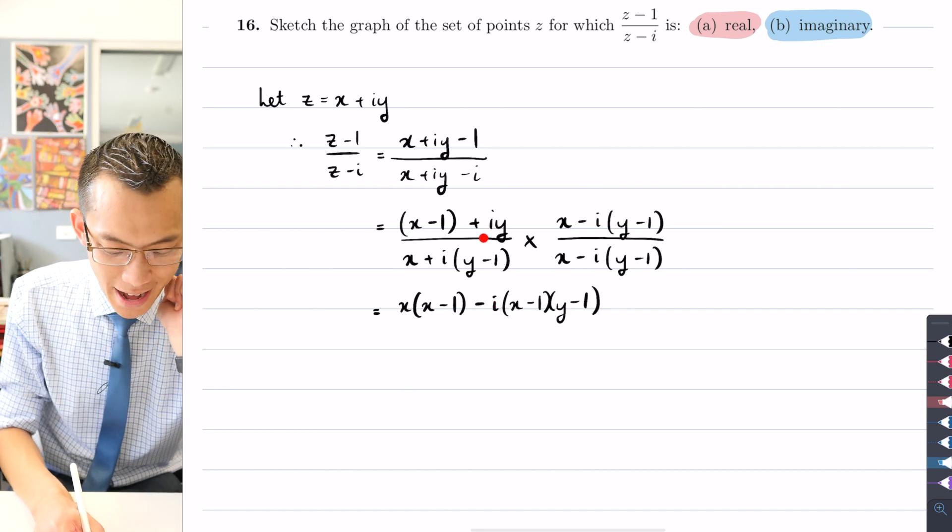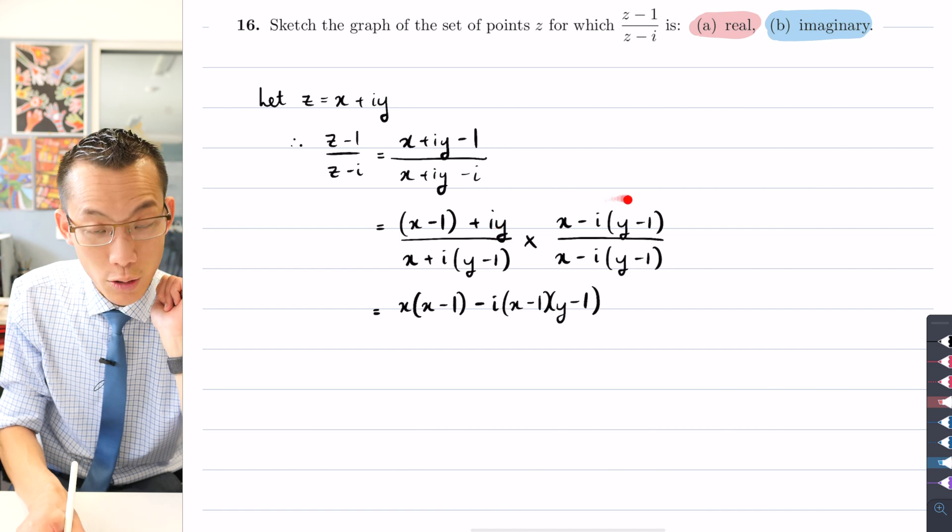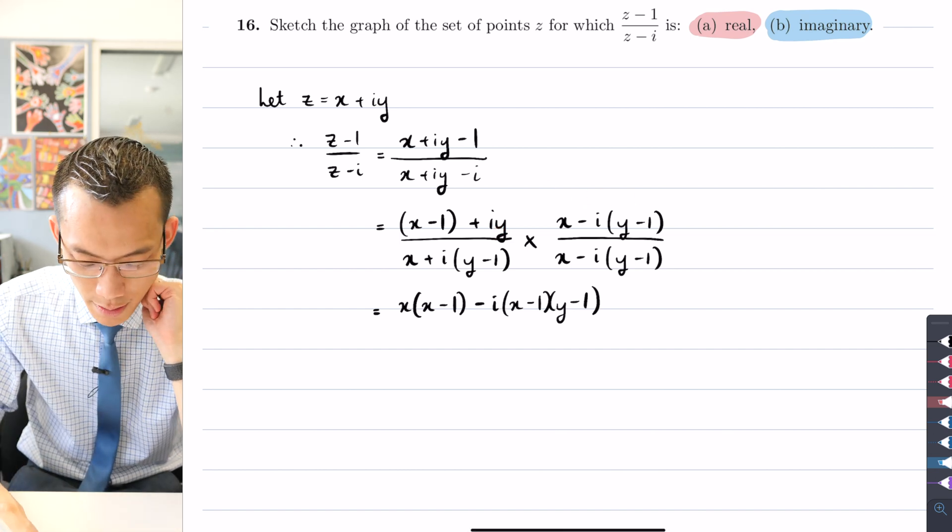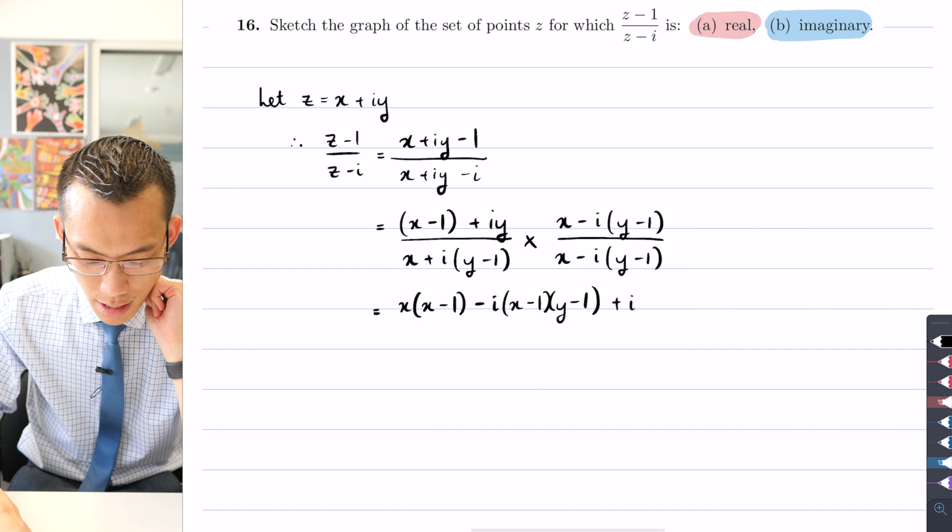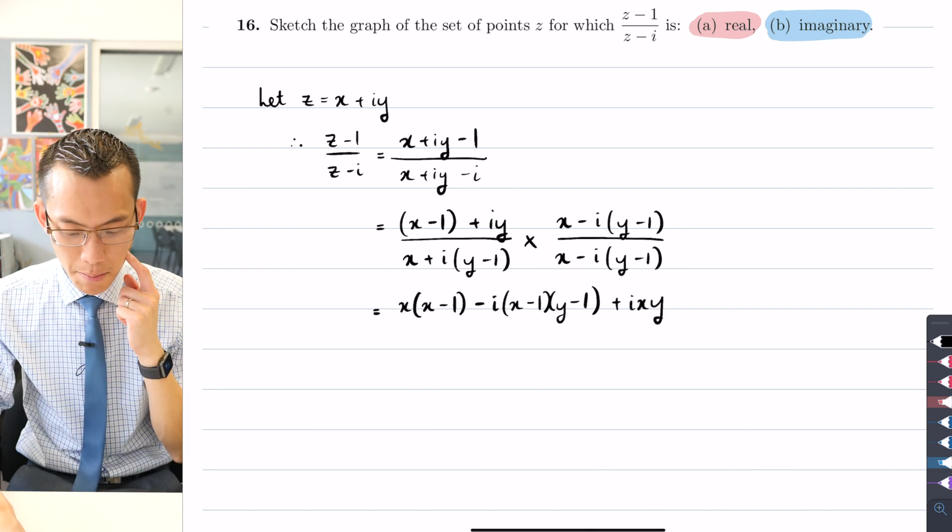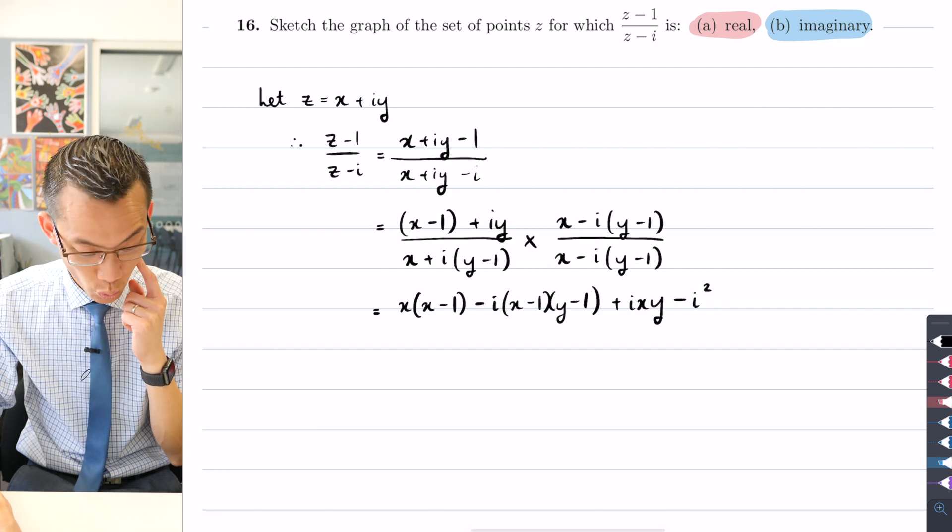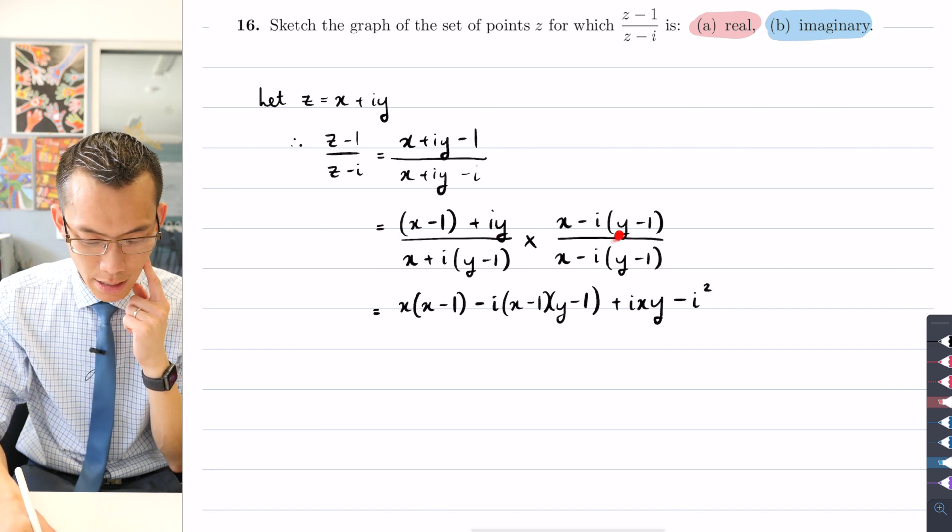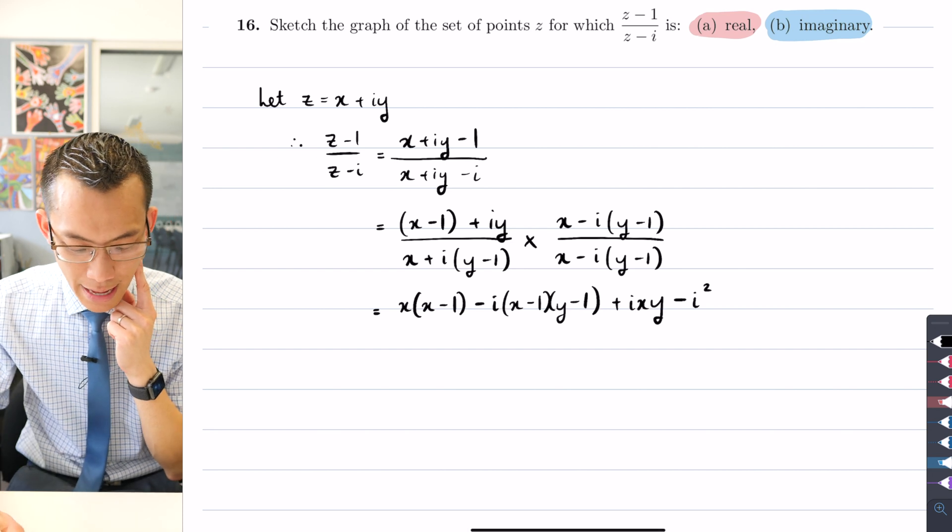So far so good. Let me now distribute this iy across to these other terms, so that gives me in the first instance plus ixy. And then be careful here, I've got a minus but then I have an i squared.